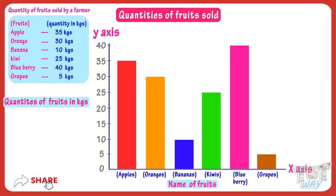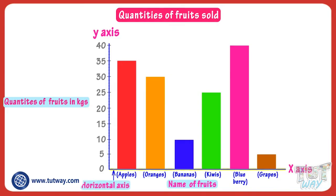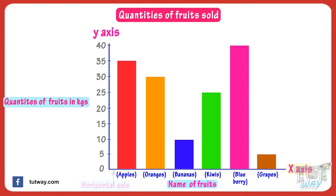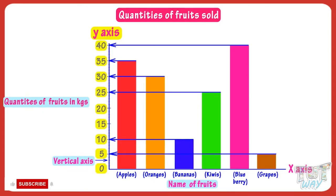And our bar graph is ready. Here the bars are drawn vertically on the horizontal axis, which is known as the x-axis. The length of the rectangular bars represents the quantities of corresponding fruits sold in kgs. The length of the bars is measured with the vertical scale along the y-axis, as the numerical data is given on the vertical axis.